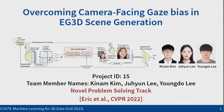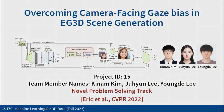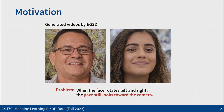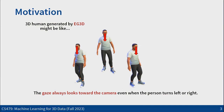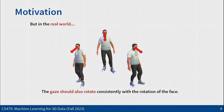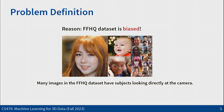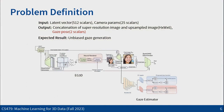Hi everyone, we are Team 15, and I am presenter Kinam Kim. My teammates are Joohyun Lee and Yongdo Lee. Let me introduce our project on overcoming camera-facing gaze bias in EG3D scene generation. In EG3D generated videos, when the face rotates, the gaze unnaturally looks toward the camera. In 3D, EG3D-generated humans always look forward regardless of orientation. In the real world, gaze direction should align with face orientation. The reason is EG3D was trained on the FFHQ dataset where most subjects look straight at the camera. Our approach uses the same EG3D input and output but also includes gaze pose from a gaze estimation model.